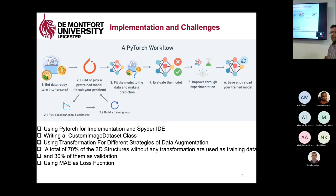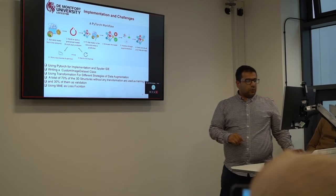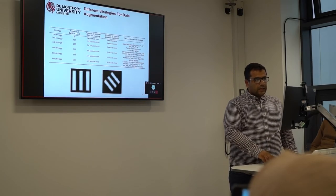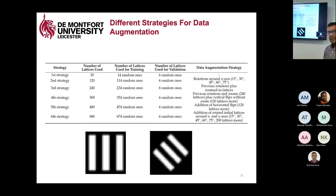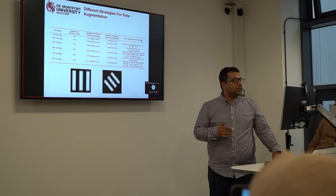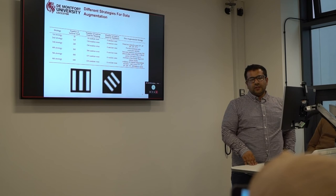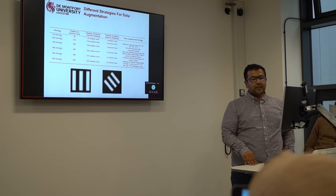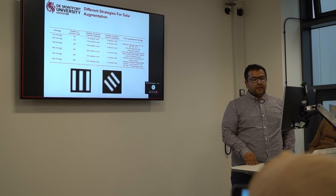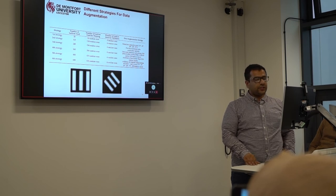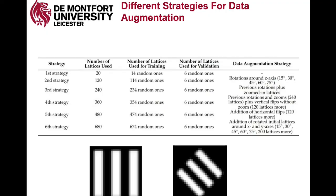Through experimentation, we tried to find better hyperparameters for the number of epochs and learning rate. We also recognized that 20 lattice structures may not be enough, so we applied different types of data augmentation to increase our dataset — including resizing, zooming, and rotation — and ran our model on the augmented dataset.